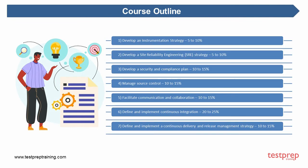The course outline covers the following areas: develop an instrumentation strategy, comprising 5 to 10 percent of the exam; develop a security and compliance plan, comprising 10 to 15 percent; manage source control, comprising 10 to 15 percent; facilitate communication and collaboration, comprising 10 to 15 percent; define and implement continuous integration, comprising 20 to 25 percent; and define and implement a continuous delivery and release management strategy, comprising 10 to 15 percent. For detailed information, you can visit Test Prep Training.